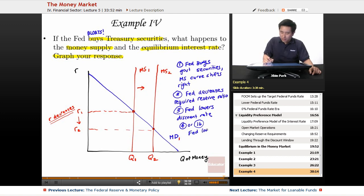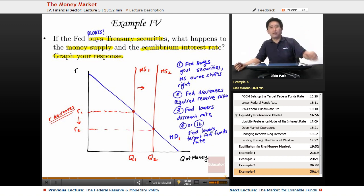If the Fed lowers the target federal funds rate, then they're gonna tell the New York Fed to actually sell government securities to get that federal funds rate higher. So the Fed actually sets the target federal funds rate by either buying or selling government securities.